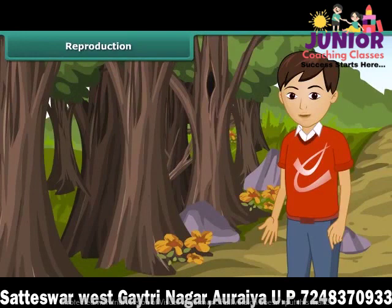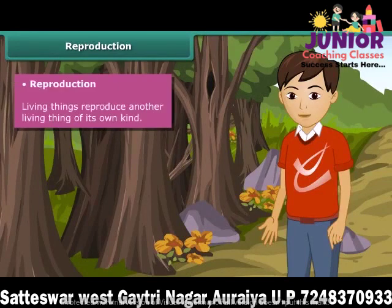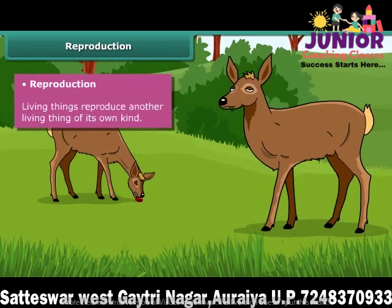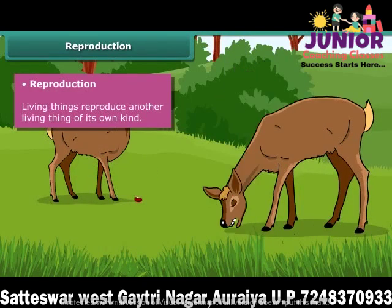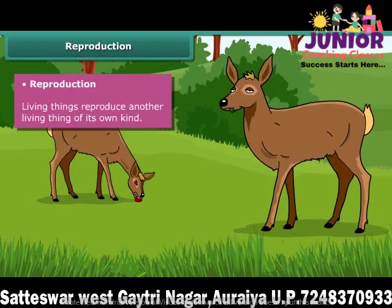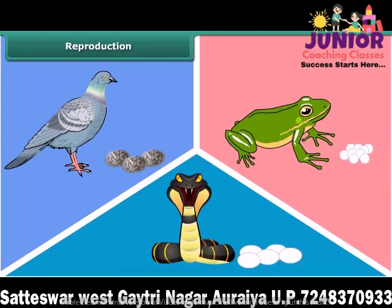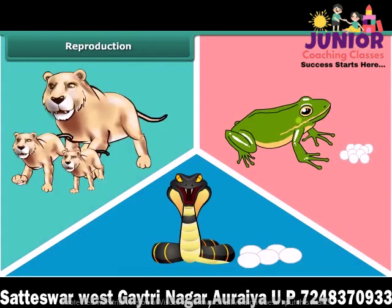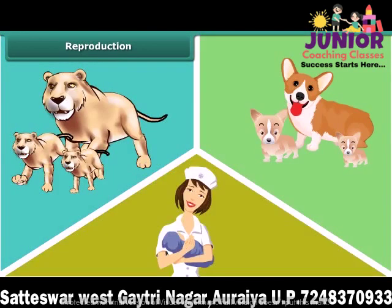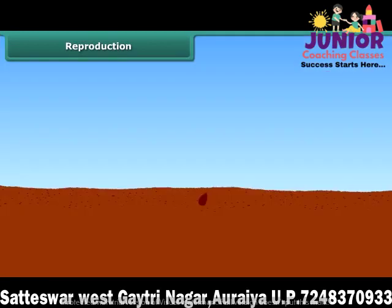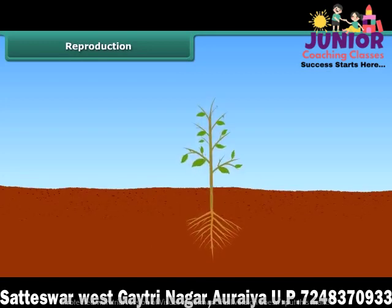A very important characteristic of living things is reproduction. All living things have the ability to reproduce another living thing of their own kind. Animals like pigeons, snakes, and frogs lay eggs, while some animals like lions, dogs, and humans give birth to young ones of their own kind. Plants reproduce through seeds or other parts of the plant.